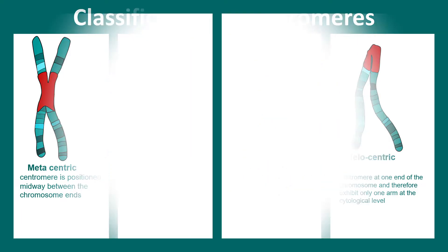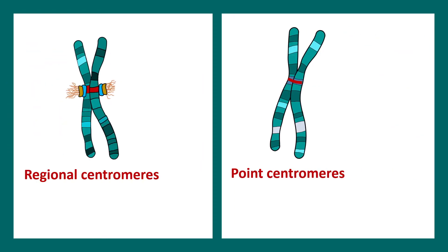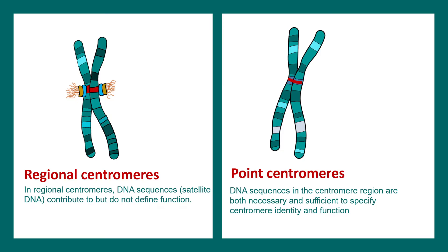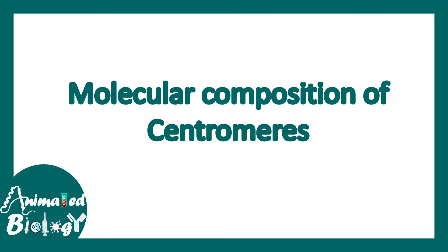Based on sequence specificity, centromeres can be divided into two groups: regional centromeres and point centromeres. Regional centromeres are very common in eukaryotes; the DNA sequences associated with them contribute to function but do not define the function. In point centromeres, the DNA sequence is necessary and sufficient to specify centromeric function. Point centromeres are common in budding yeast and span about 150 base pairs, whereas regional centromeres, common in mammalian cells, range several hundred kilobases.